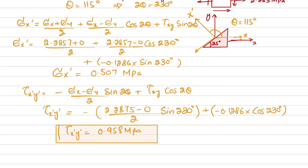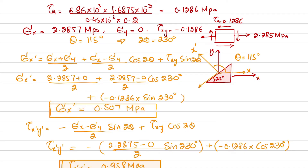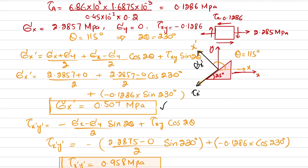These are the two answers. On the stress element oriented along the grain, the normal stress perpendicular to the grain is σX' = 0.507 MPa (tensile), and the shear stress parallel to the grain is τX'Y' = 0.958 MPa.